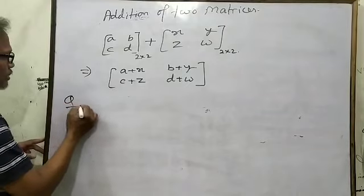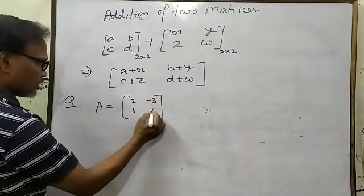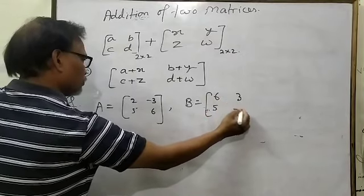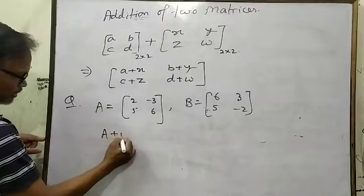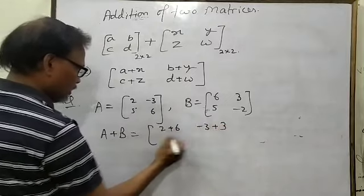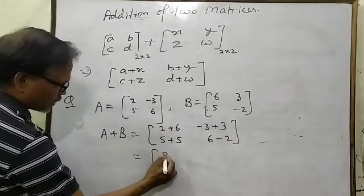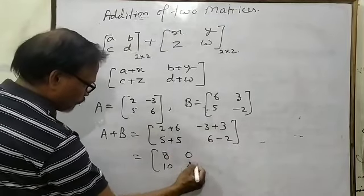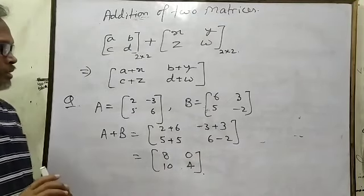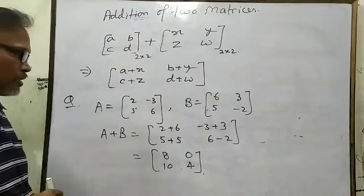For example, if A equals [2, −3; 5, 6] and B equals [6, 3; 5, −2], then A plus B equals [2+6, −3+3; 5+5, 6+(−2)], which equals [8, 0; 10, 4]. Simple addition. Only be careful about the signs — if any one sign is incorrect, you will not get the correct answer.